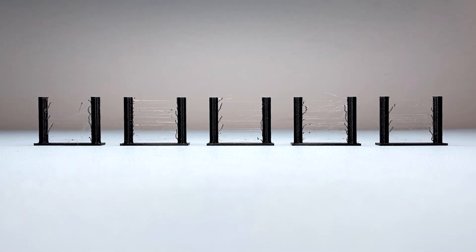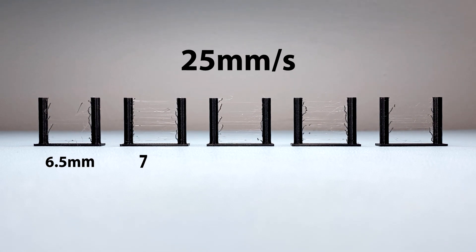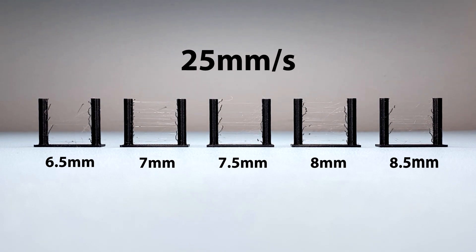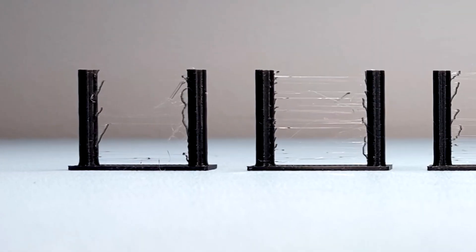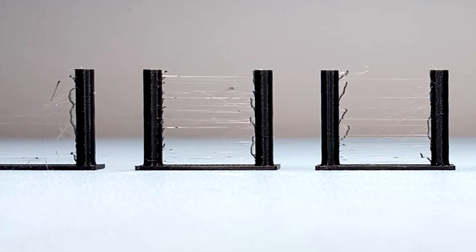In the first batch, the retraction speed is fixed at 25 mm per second with the retraction distance set from 6.5 default to 8.5 mm with an increment of 0.5 mm. If you look carefully at the printed model, you can actually see that there is a slight reduction of string as the retraction distance is increasing.